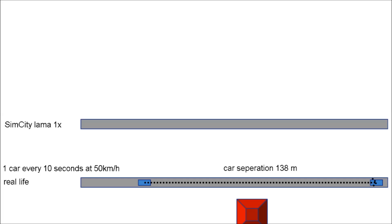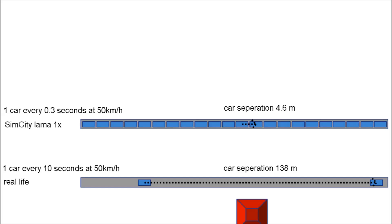In SimCity, game time runs about 30 times faster than real life without speeding up the physics — meaning the cars. The traffic remains the same in the sim world as in reality, since the population still has to go to work in the morning, return in the evening, and go shopping, despite the SimCity day being only 48 minutes. So we have to fit the same amount of traffic into a 48-minute day without speeding the cars up. Looking out our window in this situation, we see a car passing every 0.3 seconds at 50 km/h, resulting in an average bumper-to-bumper distance of just 4.6 meters.